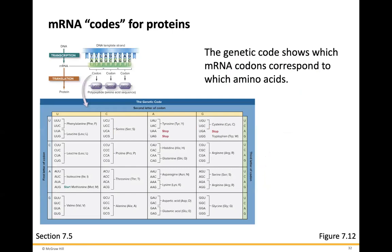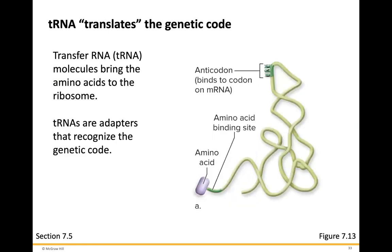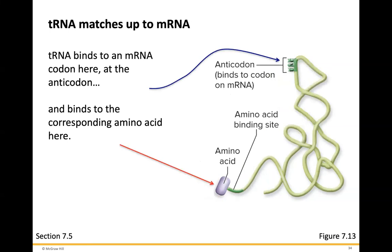The genetic code table shows which messenger RNA codons correspond to which amino acids. Transfer RNA translates the genetic code by bringing amino acids to the ribosomes. Transfer RNAs are adapters that recognize the genetic code. The transfer RNA has an anticodon — which is the complement of the codon — that recognizes and binds to the messenger RNA. The transfer RNA binds to the messenger RNA codon at the anticodon region, and to the corresponding amino acid at the other end.